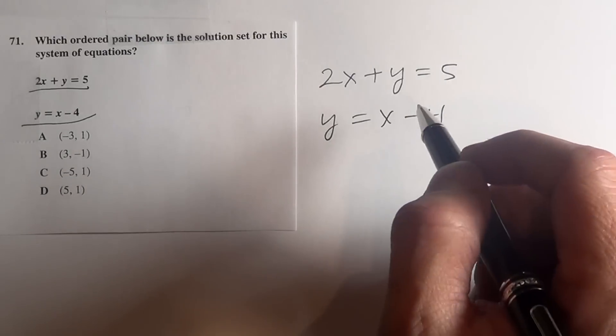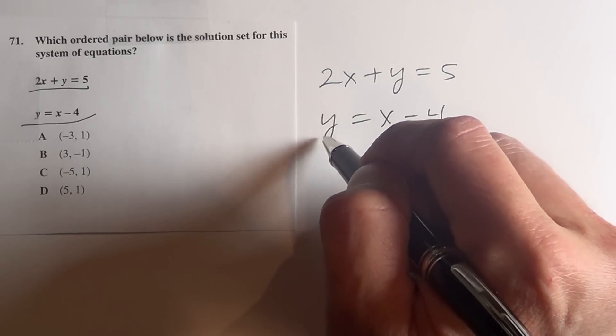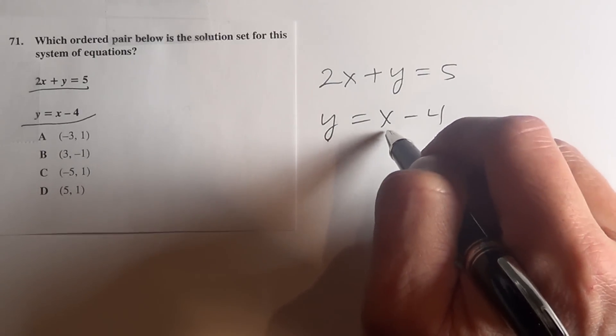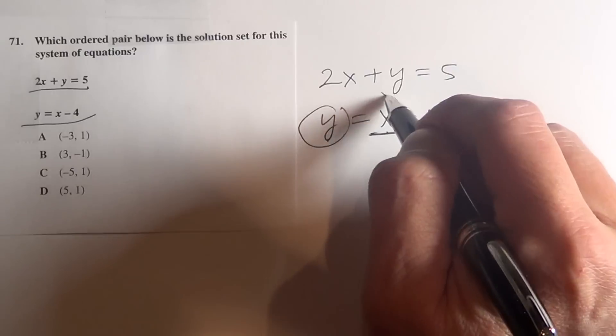So what we need to do is solve for x first. What I'm going to do is take y equals x minus 4, and for y, I'm going to substitute this.